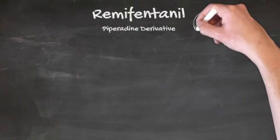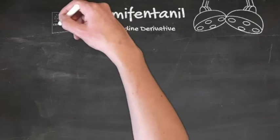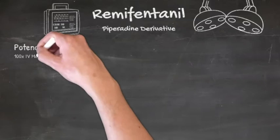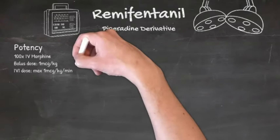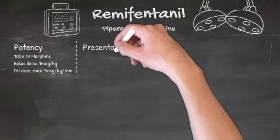Remifentanil is a very unique opioid and since it's come to the market it's had a transformational impact on anaesthetic practice. It too is a piperidine derivative and a pure agonist at mu opioid receptors. It has roughly the same potency as fentanyl and you can bolus remifentanil at one microgram per kilo IV, but remifentanil's pharmacokinetics make it ideal for IV infusions, which can be run up to a maximum of one microgram per kilogram per minute.